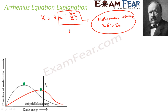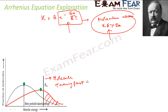When we increase the temperature, this value increases. That means the number of molecules whose kinetic energy is greater than Ea is increasing — as shown by the shaded region. These molecules take part in the reaction. On the other side, molecules with kinetic energy less than activation energy don't take part in the reaction; they don't have enough speed.